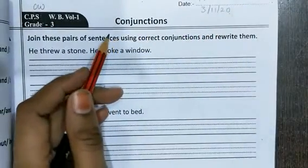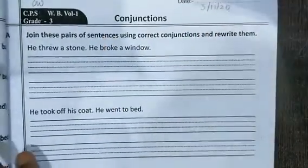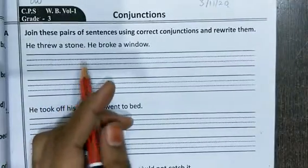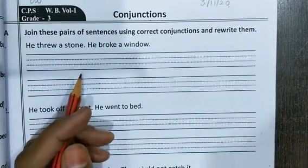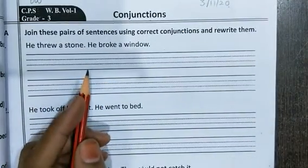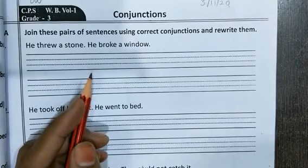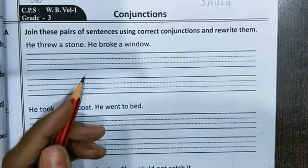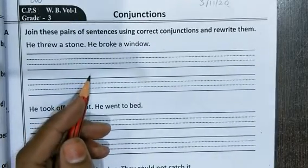Conjunctions we have seen — conjunctions are none other than the joining words. They are known as joining words. They join two sentences or two words together. We have studied the conjunctions: and, but, or, and because. So we have studied 4 conjunctions.